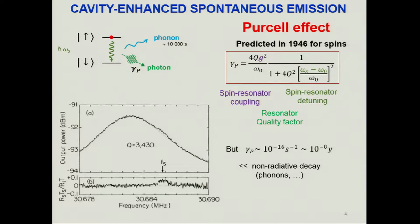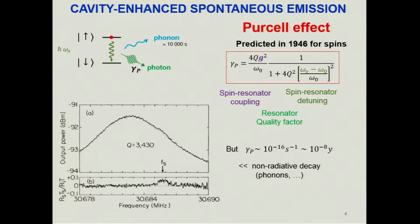The radiation-limited lifetime of spins is an effect that does exist — this is called the Purcell effect. When you put the spins in a cavity that concentrates the field, there is an increase in the emission rate of photons by the spins, which is proportional to the quality factor of the resonator and to the coupling energy between the spins and the resonator. It is maximum when the two systems are at resonance.